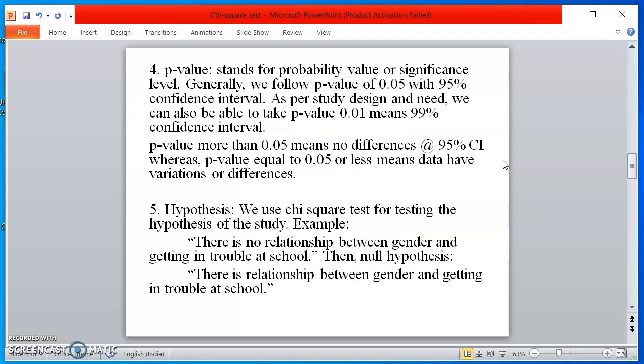P-value stands for probability value or significance level. Generally, we follow P-value of 0.05 with 95% confidence interval. As per study design and need, we can also take P-value 0.01, means 99% confidence interval. P-value more than 0.05 means no differences at the rate of 95% CI, whereas P-value equal to 0.05 or less means data have variations or differences.